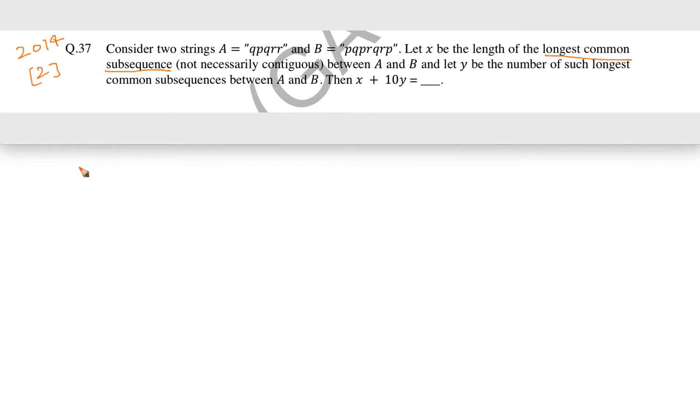They are saying that A equals QPQRR and B equals PQPRQRP.